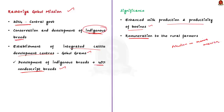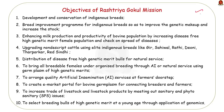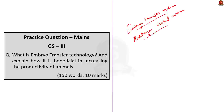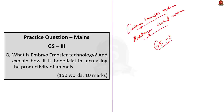The objectives of the Rashtriya Gokul Mission are given here — take note of the important points. In this discussion we saw what embryo transfer technology is, its benefits, and the Rashtriya Gokul Mission to protect bovine breeds. This is a very important topic for mains, and this kind of mission can also be asked in prelims-type questions. In prelims nowadays, embryo transfer technology is a frequently asked topic, so make note of each and every point discussed.